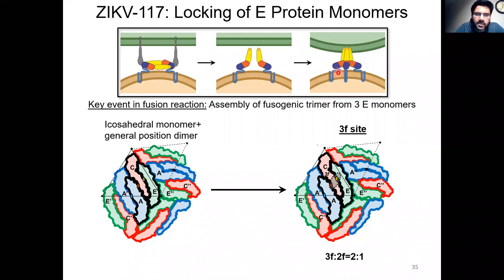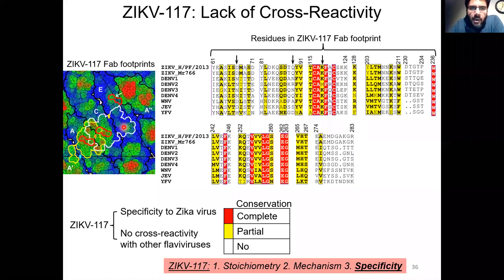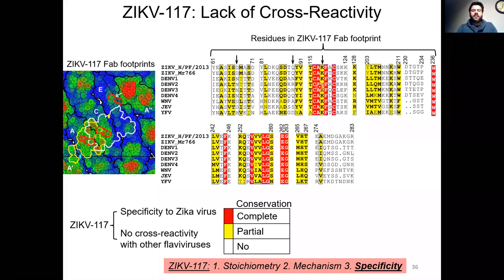Now let's move on to the third and final question: what is the molecular basis of specificity of this antibody to the Zika virus? Using the FAB footprint information derived from our cryo-EM structure, we constructed a multiple sequence alignment of residues in the FAB footprint using E-protein sequences from two different strains of Zika virus, four serotypes of dengue virus, and one strain each of West Nile virus, Japanese encephalitis virus, and yellow fever virus. This alignment is color coded — red for complete conservation, yellow for partial conservation, and white for no conservation. The FAB footprint is fairly poorly conserved, providing a molecular-level explanation for why this antibody is specific to Zika virus and does not cross-react with other flaviviruses.